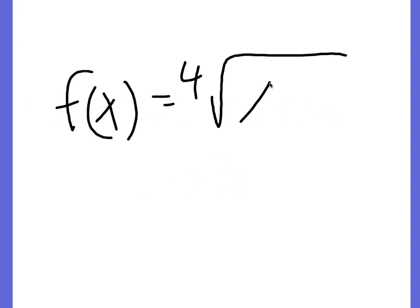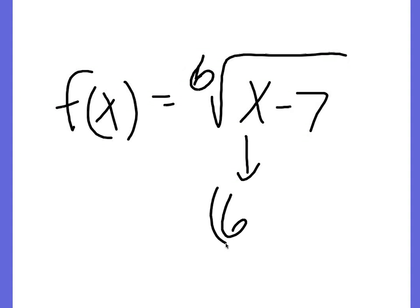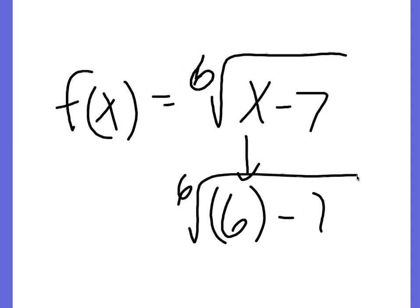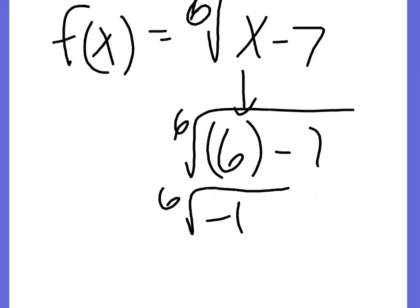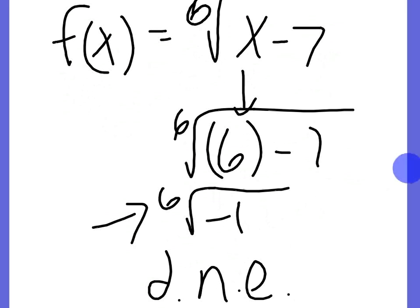Let's test that. The function is f of x equals the sixth root of x minus 7. If we plug in 8, 9, 10, or 11, the radicand is positive. But if we plug in 6, we get the sixth root of negative 1. You can't take an even root of a negative number, so it doesn't exist, meaning 6 is not part of the domain. The domain is x greater than or equal to 7. Plugging in 7 gives 0, and we do get something back.